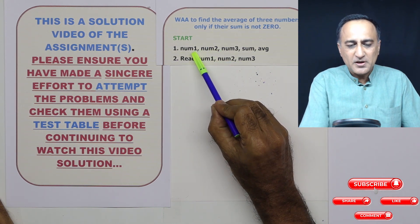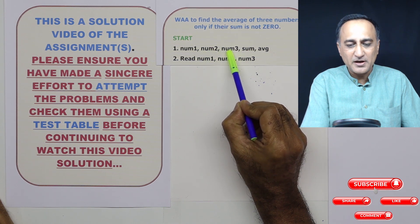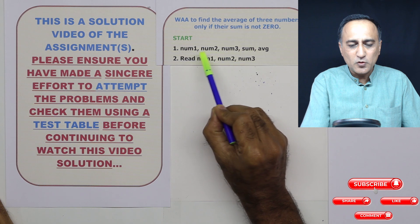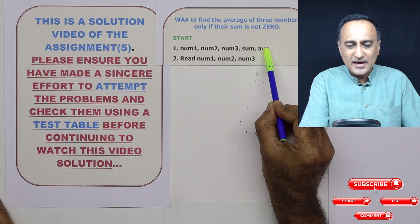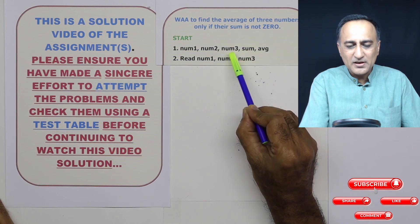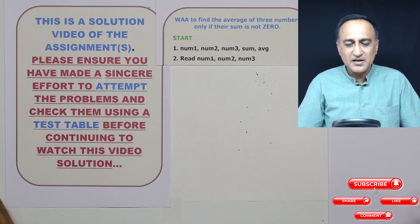The first number is going to be num1, num2 in the second and num3 is the third memory location. Sum is going to hold the sum of num1 plus num2 plus num3. And average is going to hold sum divided by three because there are three numbers.